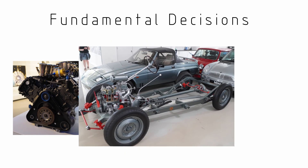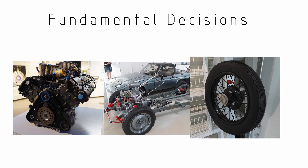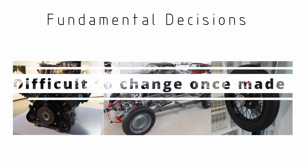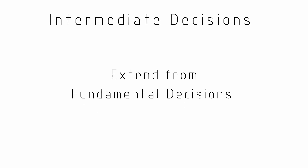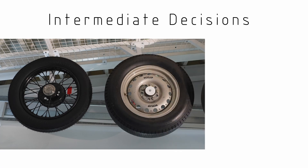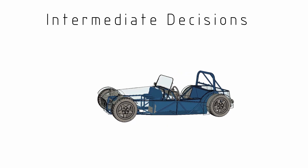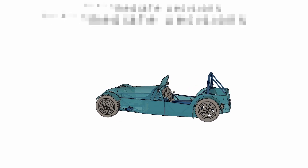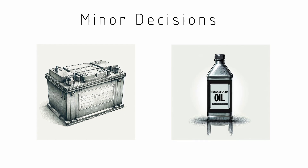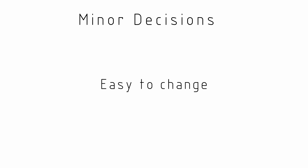When undertaking a large engineering project like the design and manufacture of a sports car there are a lot of decisions to make. There are fundamental decisions like what sort of motor you're going to run, what sort of chassis you're going to use and the tyres — these fundamental decisions are going to be very difficult to change once you've made them. Then there's intermediate decisions that extend from the fundamental decisions. The tyre choice decides the wheel choice. The chassis style will dictate how your bodywork might be made and assembled. And then there are many minor decisions — like what sort of battery you're going to run or what fluid you're going to put in your transmission system — and these are quite easy to change.